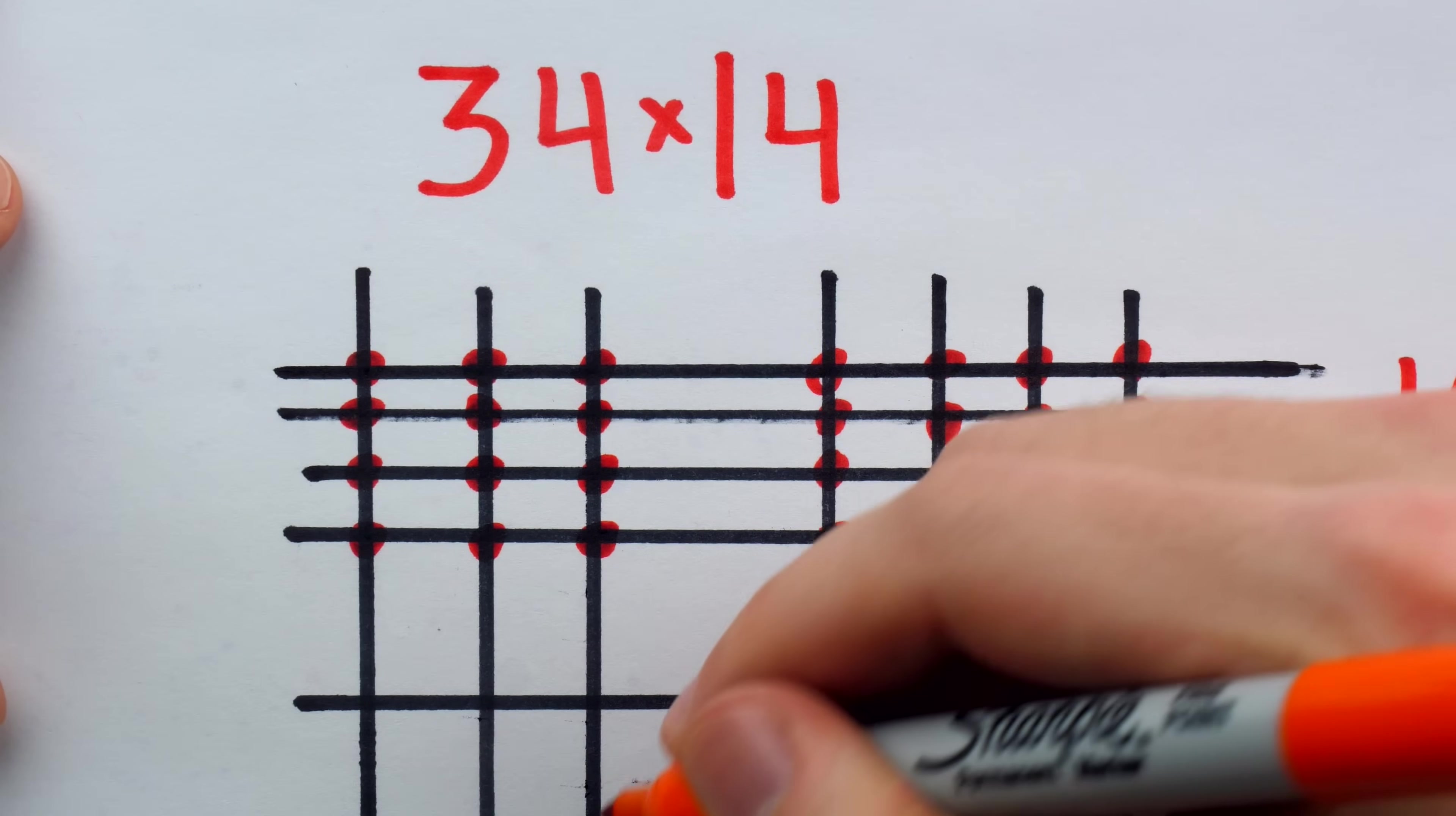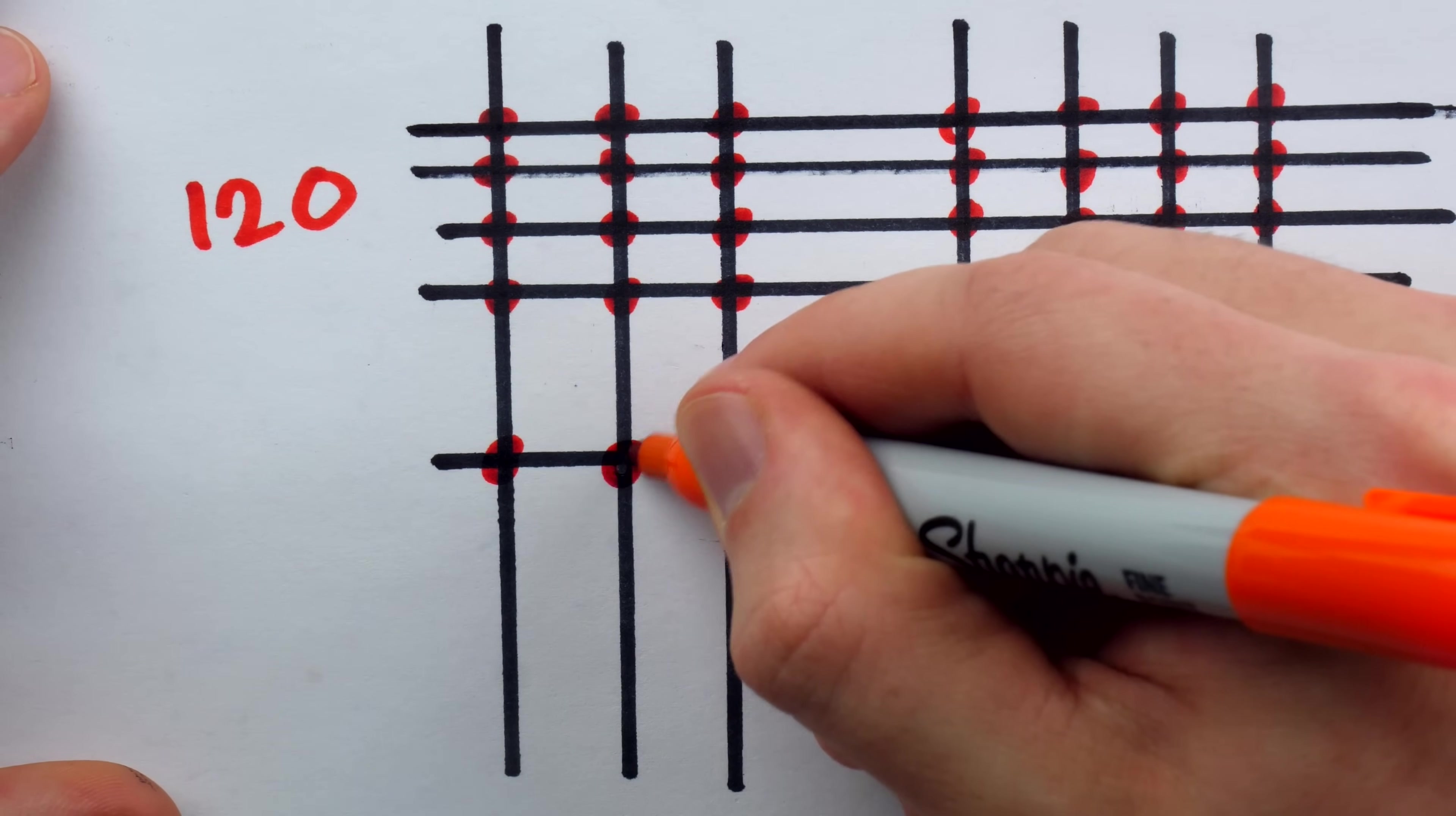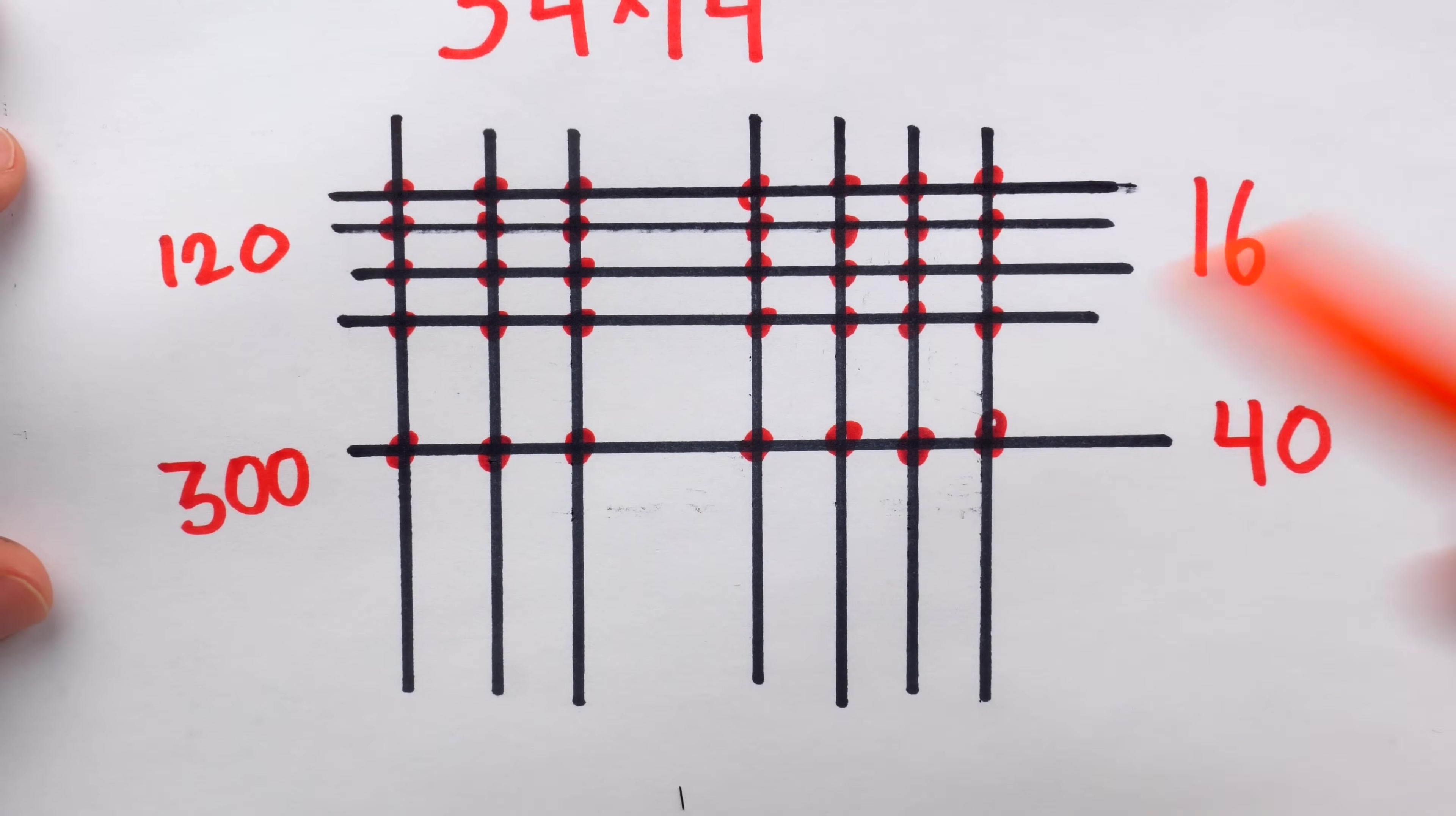Again, that's because there's a factor of 10 here, because this is tens place times ones place. So 12 dots is 120. And then down here we have three intersections. This was tens place times tens place, so that's actually 300.